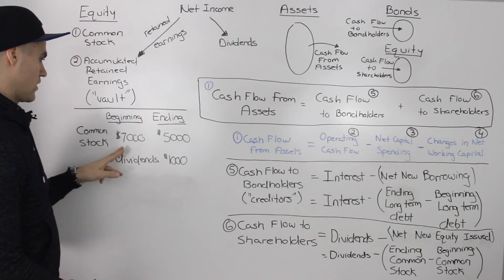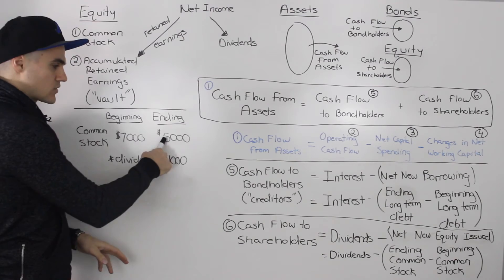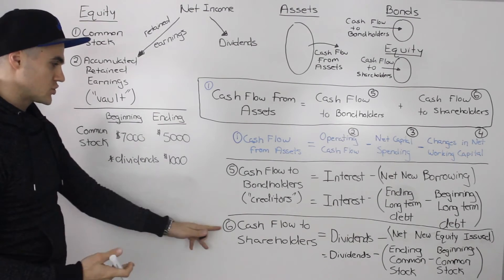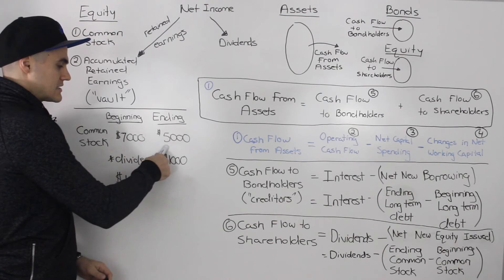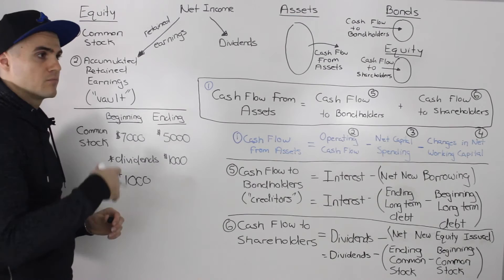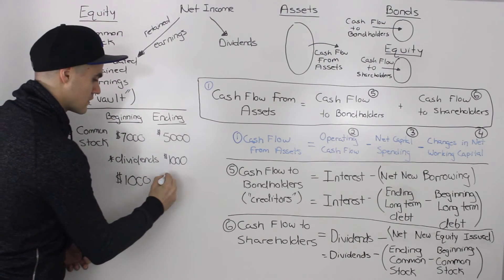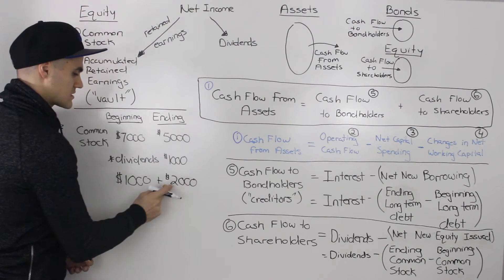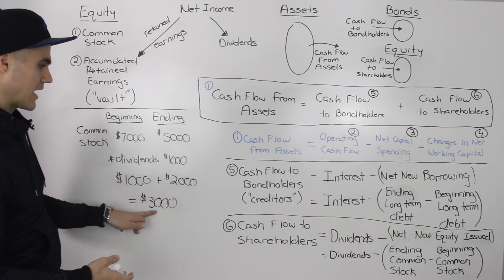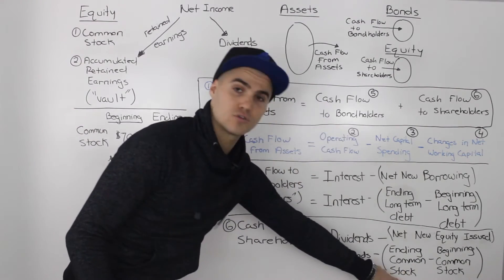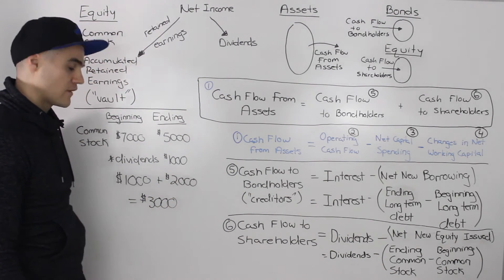Now let's switch the figures: the common stock account is decreasing by $2,000 instead of increasing. The shareholders are still receiving dividends of $1,000 — a positive cash flow. But now because the common stock account went down, the company bought back shares, paying shareholders back $2,000 — also a positive cash flow. So $1,000 plus $2,000 gives a total cash flow to shareholders of $3,000. Using the formula: $1,000 minus negative $2,000 — the two negatives become a positive — giving the same $3,000.